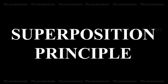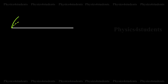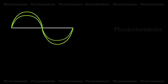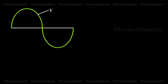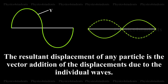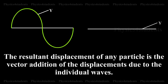Superposition Principle. When two or more waves simultaneously pass through the same medium, each wave acts on every particle of the medium as if the other waves are not present. The resultant displacement of any particle is the vector addition of the displacements due to the individual waves. This is known as superposition.